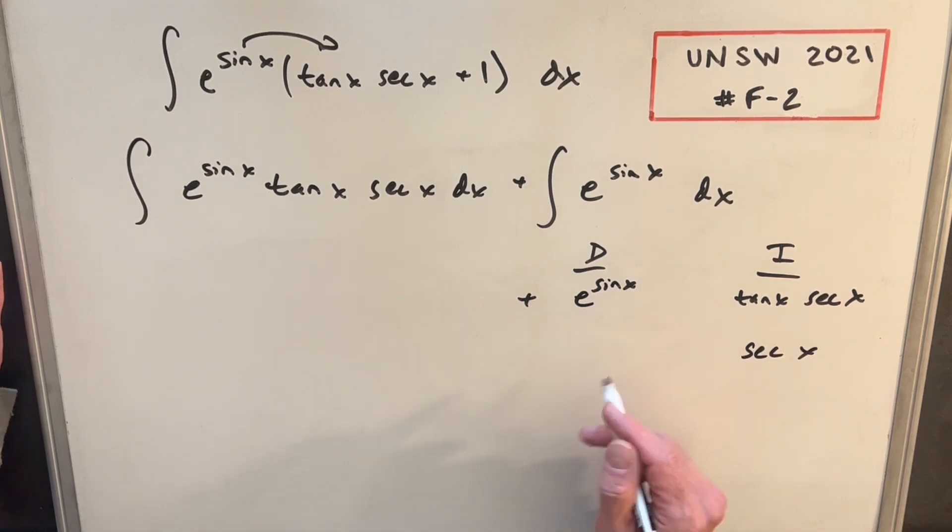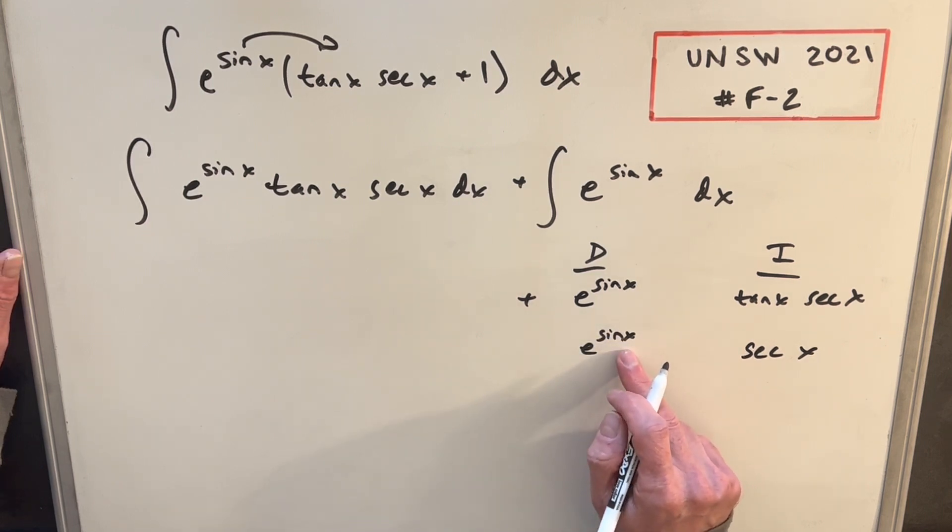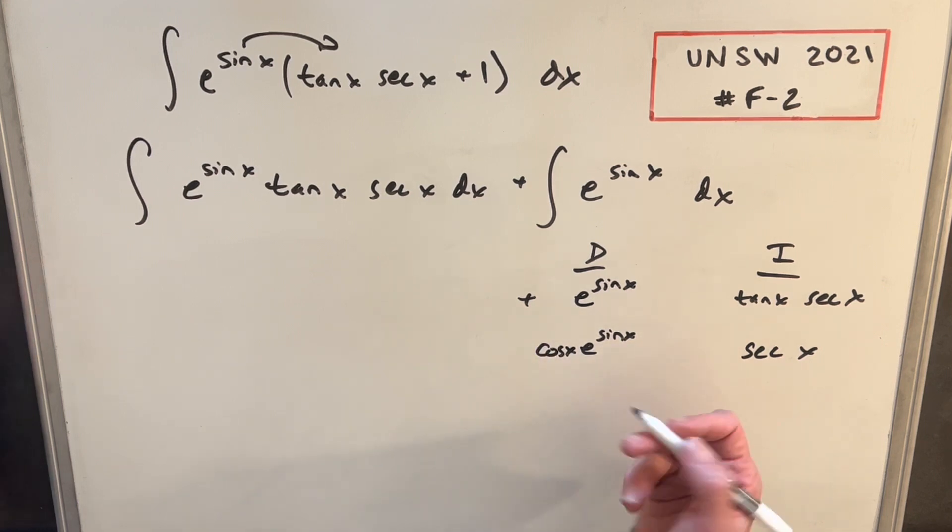And then here, the derivative of this, okay, this is going to be e sine of x, but we need the chain rule. So then we'll take the derivative of sine x, which is going to be just cosine x.